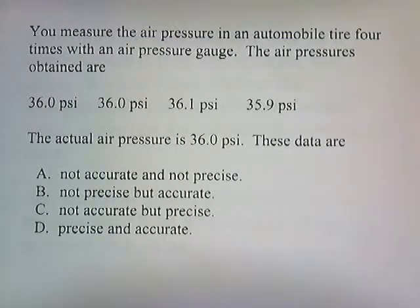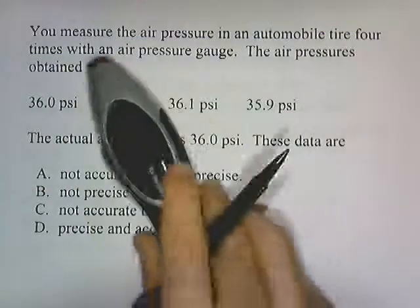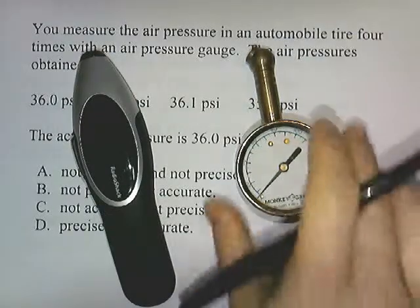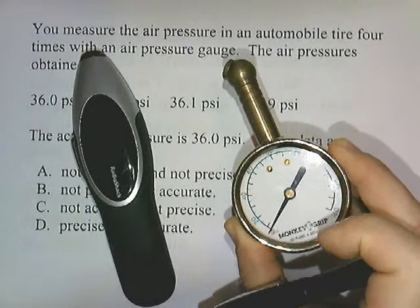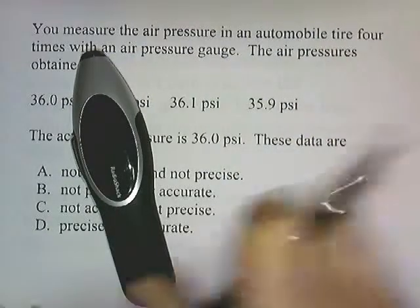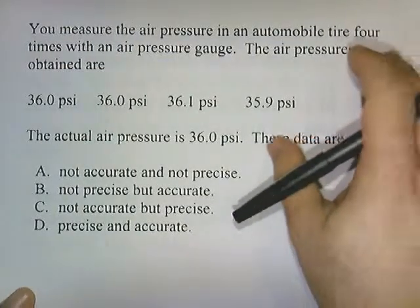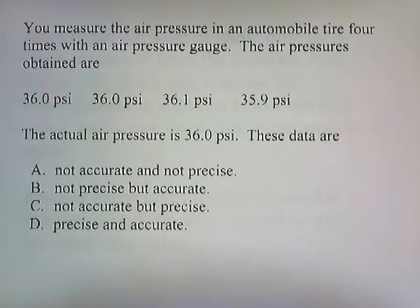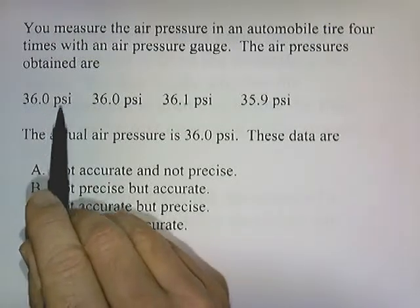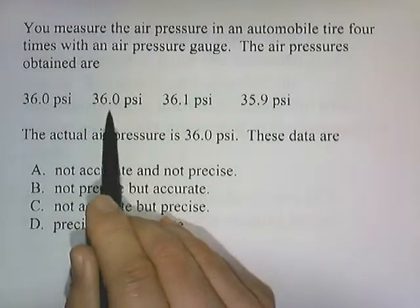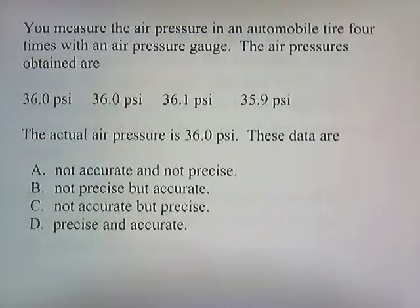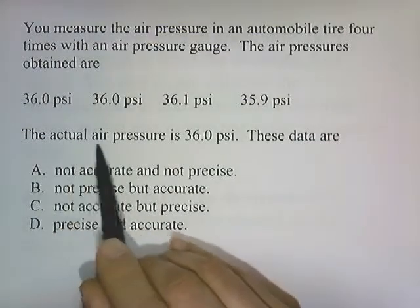Try this question. You measure the air pressure in an automobile tire four times with an air pressure gauge. You put this over the stem and then there's a little display right here. Here's another air pressure gauge. You put this over the stem and then the needle moves and tells you how much air you got in your automobile tires. It's an important thing to do. If you have low air pressure, you're getting bad gas mileage. So we measure the air pressure in an automobile tire four times. The air pressures obtained are 36 psi. PSI is pounds per square inch. The second time we get 36 psi. Third time we get 36.1 psi. And the fourth time we get 35 psi. The actual air pressure is 36 psi.